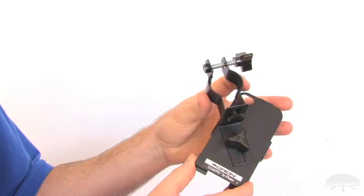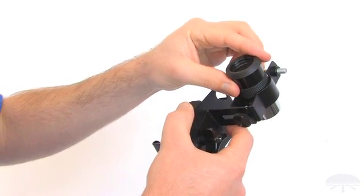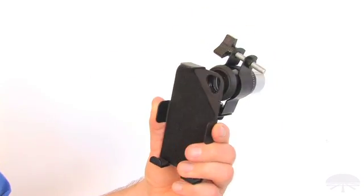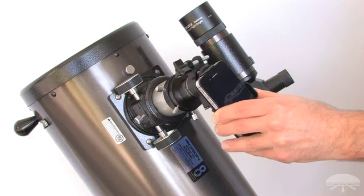The assembly of the adapter is simple. Once you have tightened the lock knobs, insert an eyepiece into the clamp and fasten, centering the lens with the opening for the camera lens. Insert the eyepiece into the focuser, and that's it.